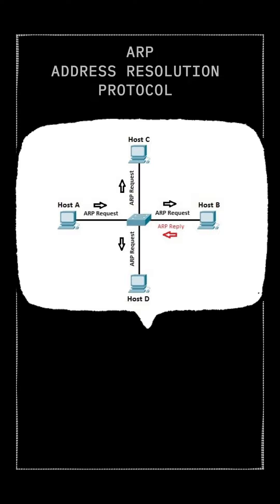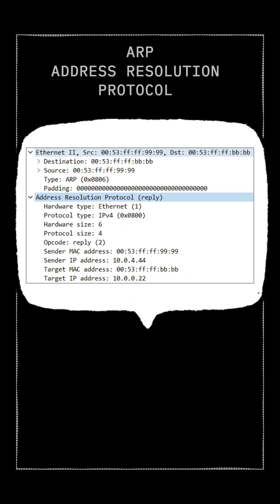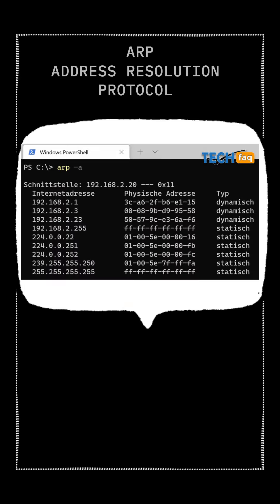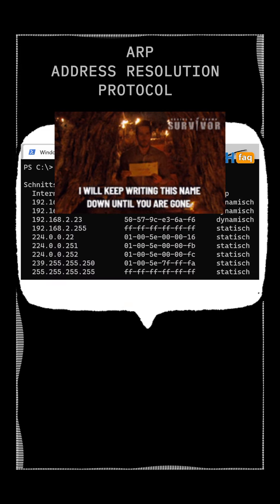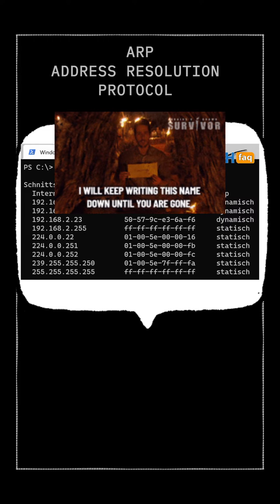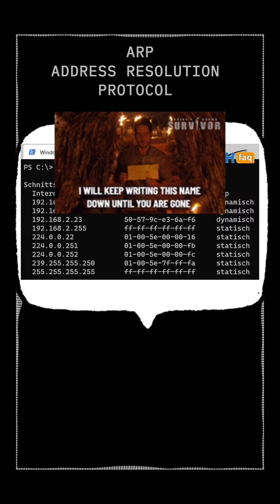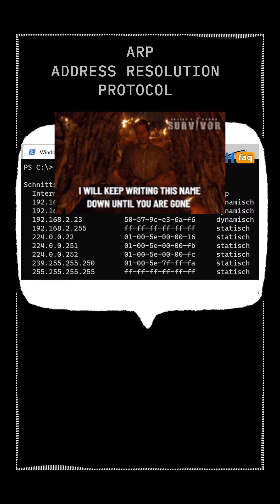The ARP Reply: The device with the matching IP address responds with an ARP reply, providing its MAC address. The sender then caches the IP-to-MAC address mapping for future reference, improving efficiency.